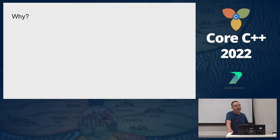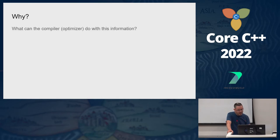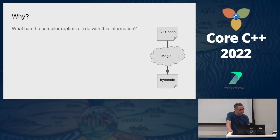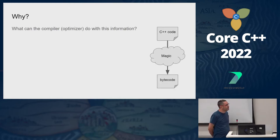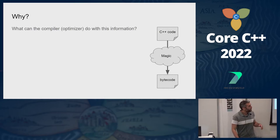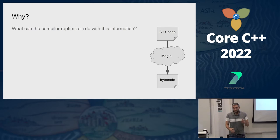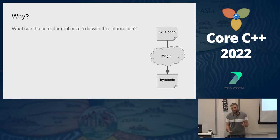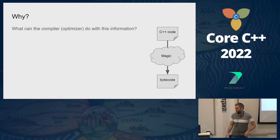So the question is why do we need that? How can it help? In order to understand why, we should ask what the compiler and optimizer can do with this information. The compiler takes C++ code as input and transforms it into machine code which you can run on the CPU.